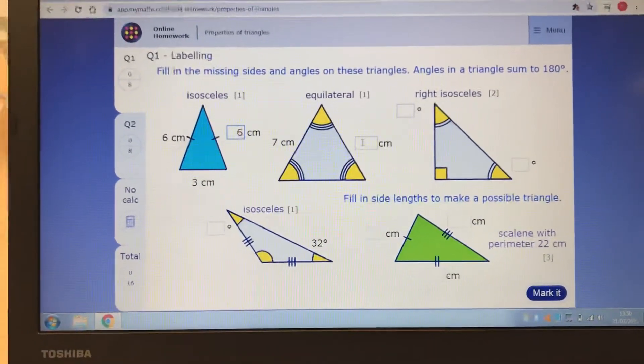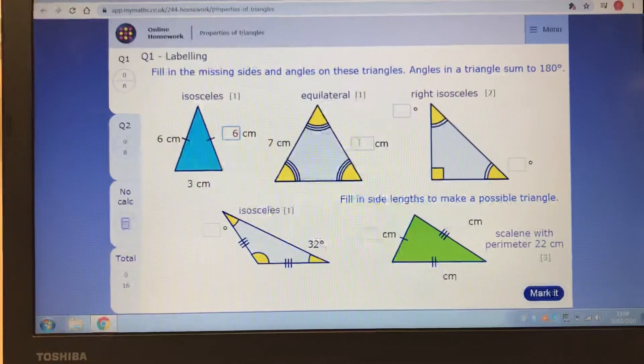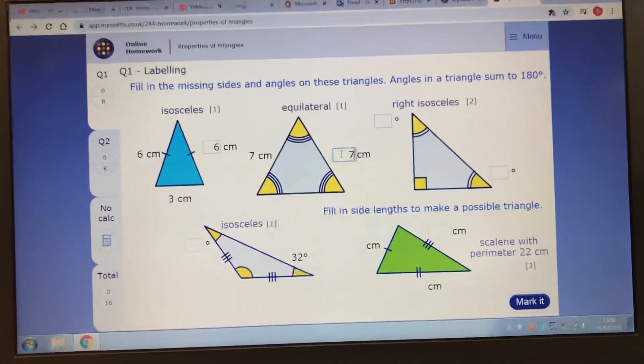Equilateral. These lines here just mean the angles are the same. You may have seen them before. So if that's side seven, all sides must be seven.